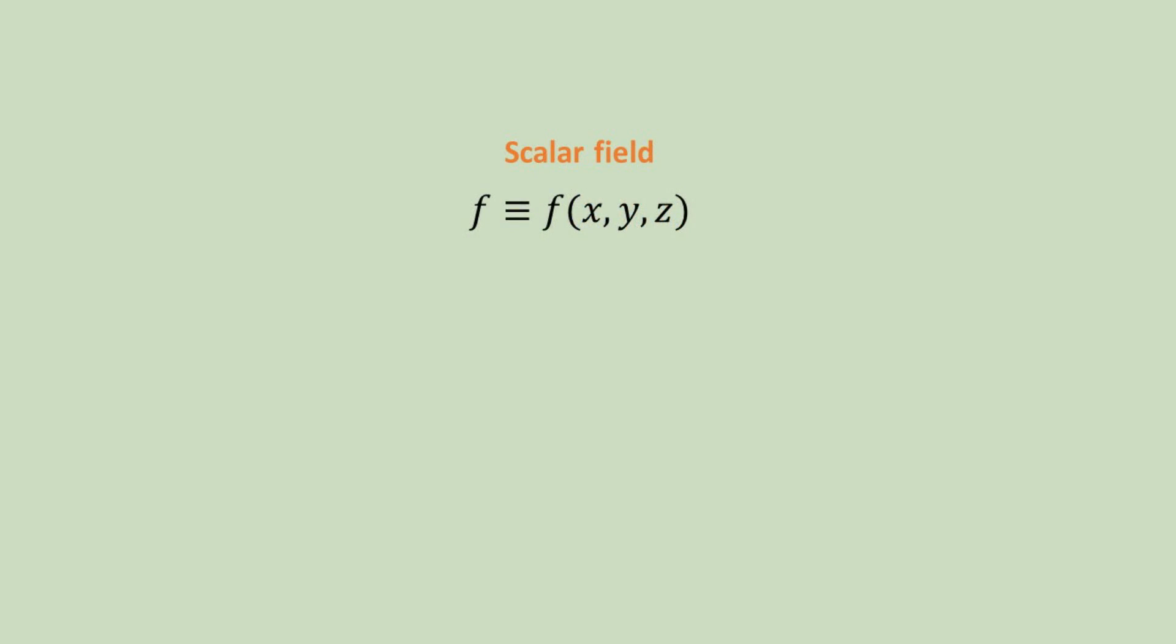For a continuous scalar field, we can also define its gradient. The gradient is a vector field with a magnitude that quantifies the total amount of change of a field per unit change in distance for all orthogonal directions. At every point in space, it points along the direction of the maximum change. Thus, it is a vector field and is also known as the gradient field.